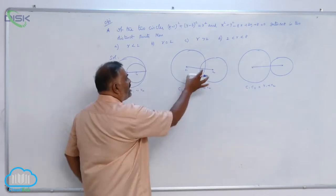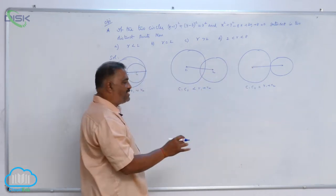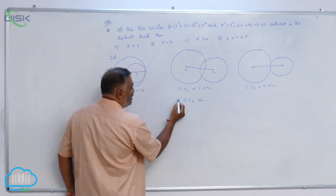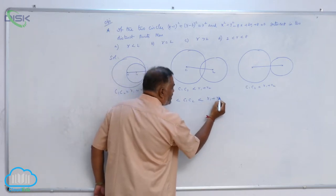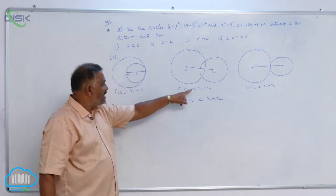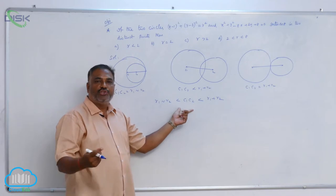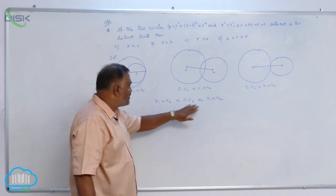That means we can rewrite this condition as C1C2 lies between R1 minus R2 and R1 plus R2. Instead of writing those separately, you can write it like this to get the range of C1C2.